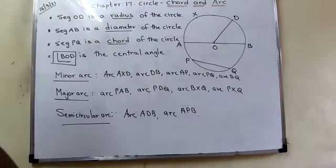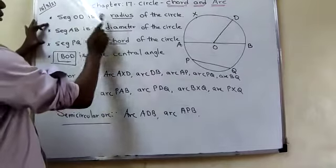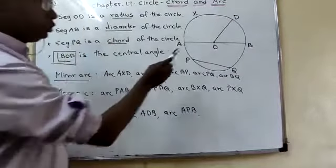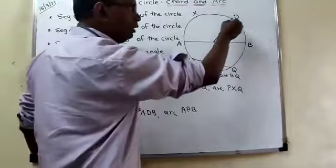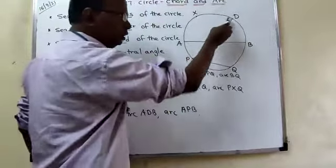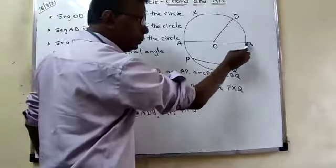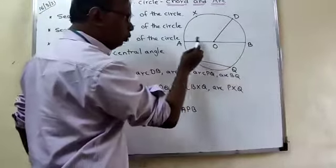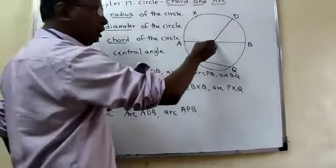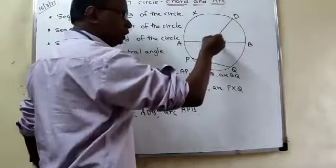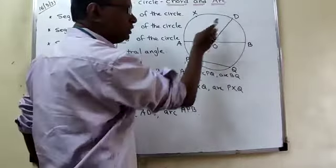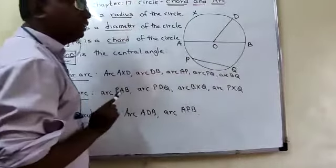OD is a radius, because the distance between the center and a point on the circle is called the radius. So there are many radii: OD, OB, OA — they are all called radii. The distance between the center and a point on the circle is called the radius.